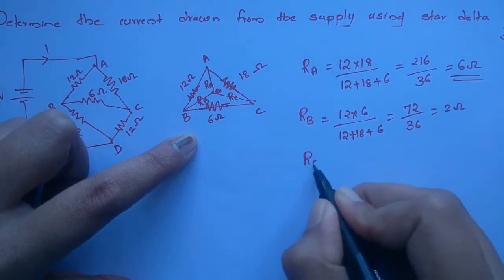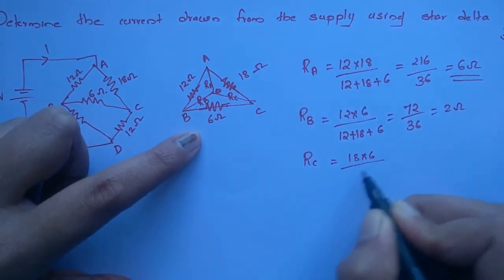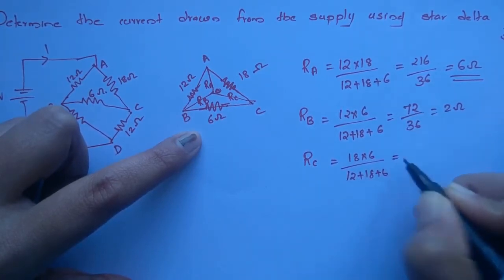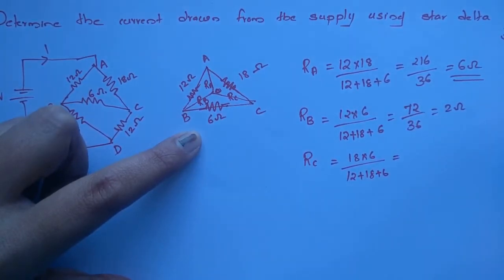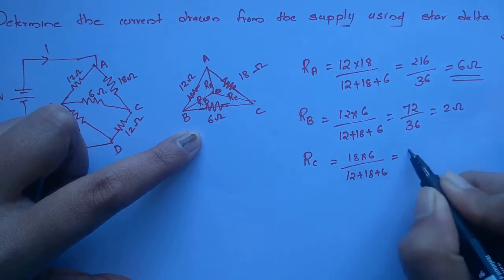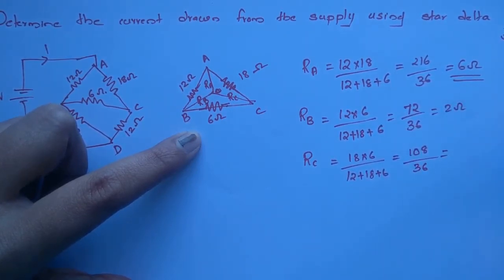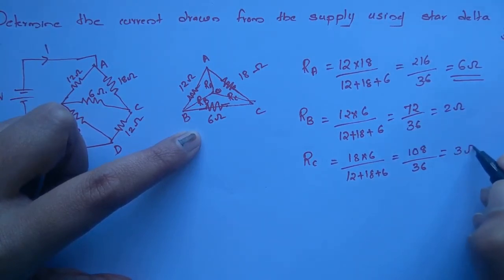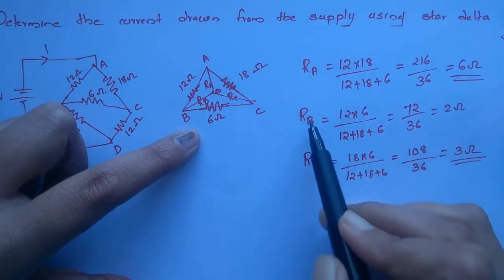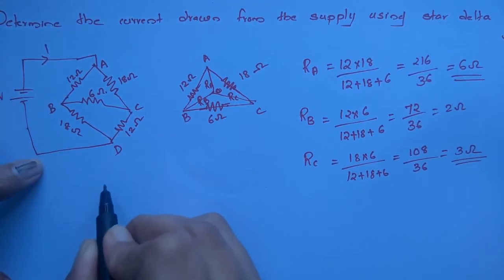And Rc: 18 into 6 divided by 12 plus 18 plus 6. That is 108 divided by 36, which equals 3 ohm. So we have to redraw the circuit with these star values in order to find the current.